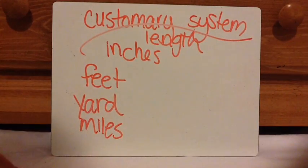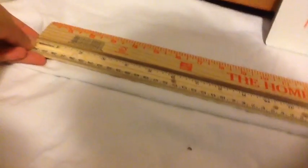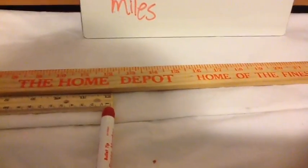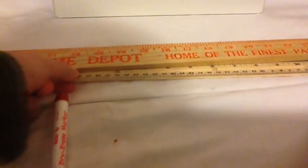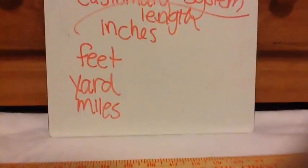Then we have yard. A yard is actually three rulers — three feet. This is a yardstick right here. So there's one ruler, that's one foot. There's two feet, and then right there — three feet. So my marker board from top to bottom is a yard.